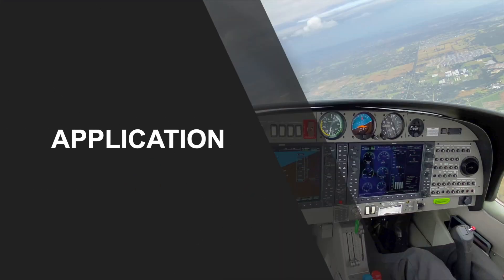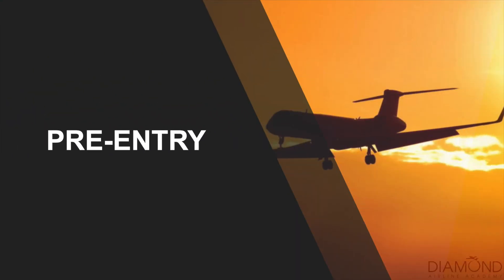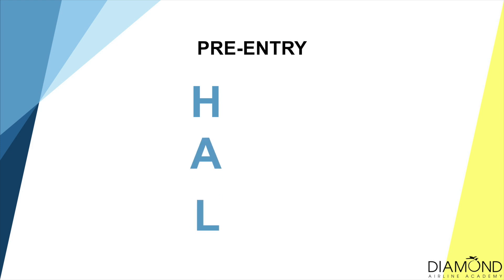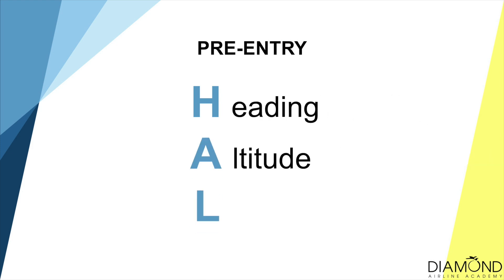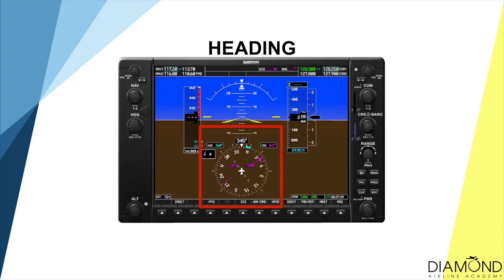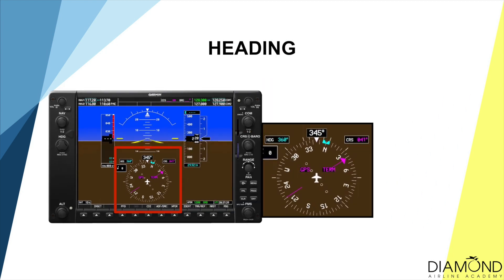When we fly straight and level we have a work cycle to help us. Before we dive into straight and level we will look at the pre-entry work cycle: H-A-L — Heading, Altitude, Lookout. For Heading, we'll nominate a heading that we'll maintain throughout the exercise. You also want to set that heading into the heading bug on the G1000 to remind ourselves which heading we are maintaining.